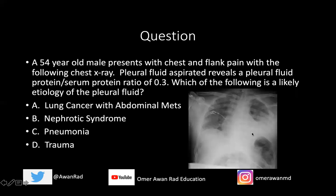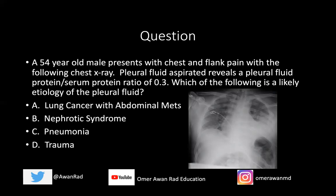Let's come back to the opening question. A 54-year-old male presents with chest and flank pain, and the chest x-ray reveals a moderate-sized pleural effusion with blunting of the costophrenic angle. The pleural fluid protein to serum protein ratio is 0.3, which is less than 0.5 by Light's criteria — so it must be a transudative effusion from a fluid overload state. The answer is nephrotic syndrome, because lung cancer, pneumonia, and trauma cause exudative effusions where the pleural fluid protein to serum protein ratio would be greater than 0.5. The answer is nephrotic syndrome.